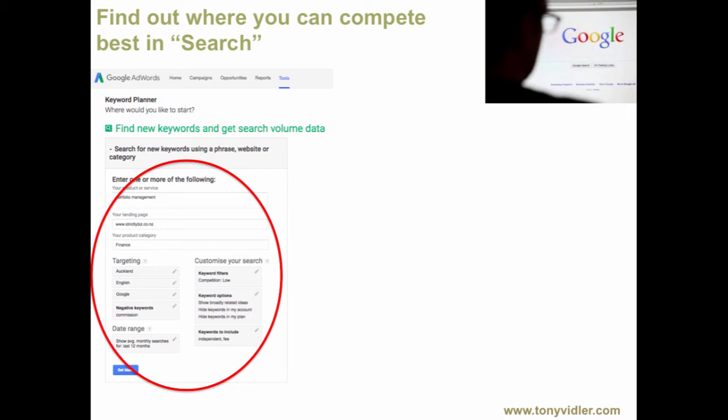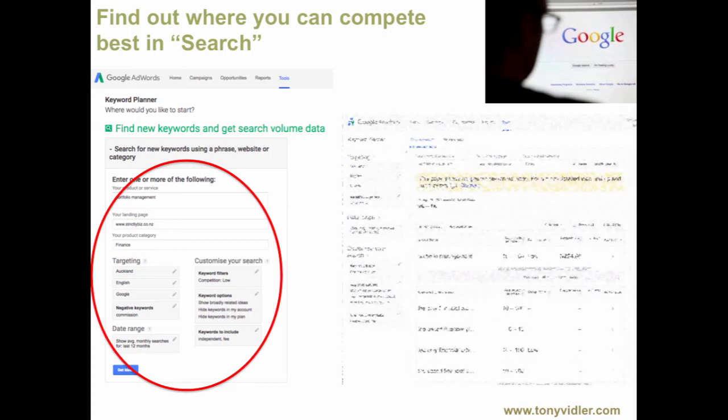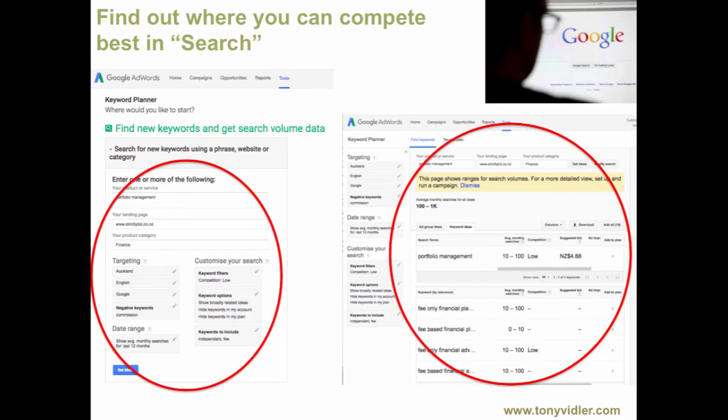That gives you a great advantage if you know how to use Google AdWords. Because you can decide to zero in on the areas where the competition is low, and therefore your chances are really high that search will land on you when people use those words and terms. You can put some marketing and advertising around it as well. So Google AdWords is a great tool to really refine the search criteria and what prospects and consumers find when they go looking for someone like you.